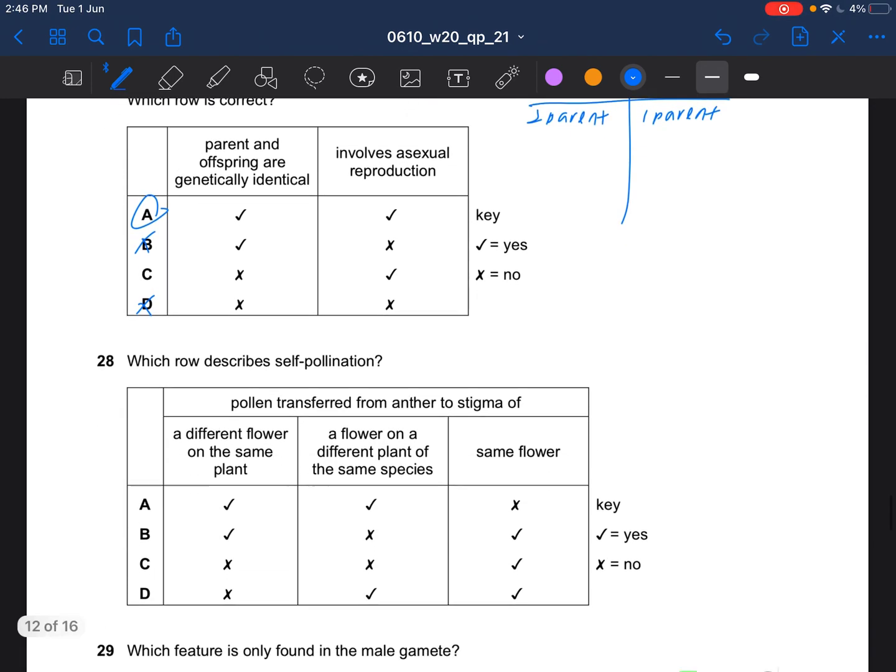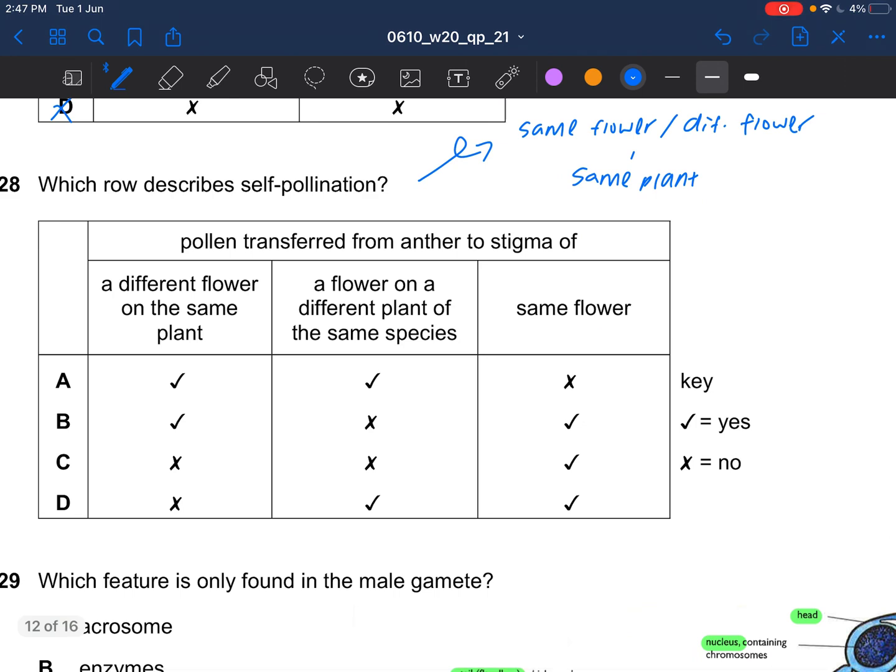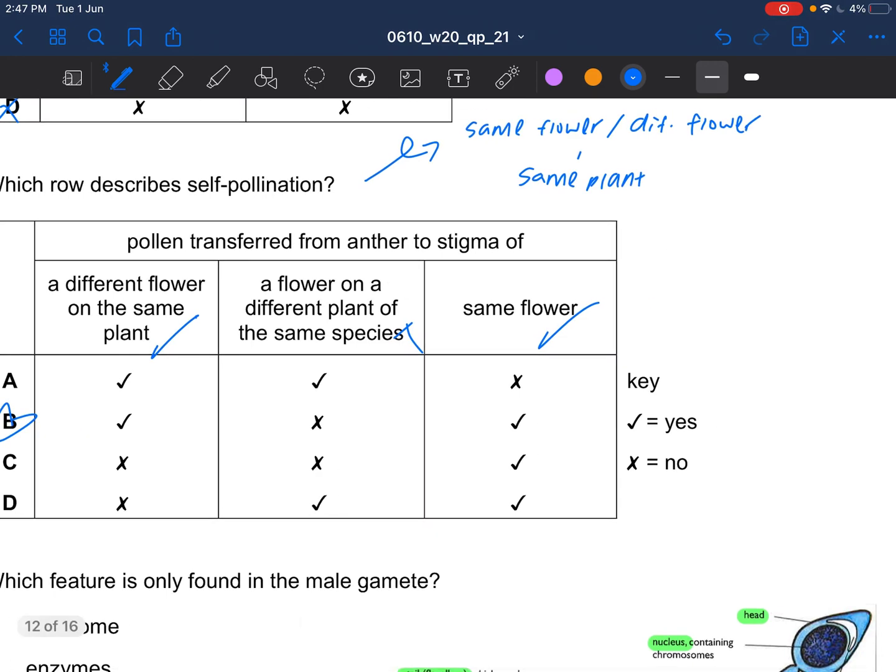Next question. Which describes self-pollination? Self-pollination is the transfer of pollen grain from anther to the stigma of the same flower or different flower on the same plant. Cross-pollination is the transfer of pollen grain from the anther to the stigma of a flower on a different plant of the same species.